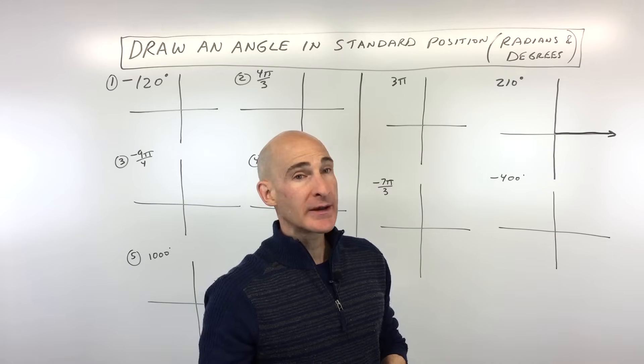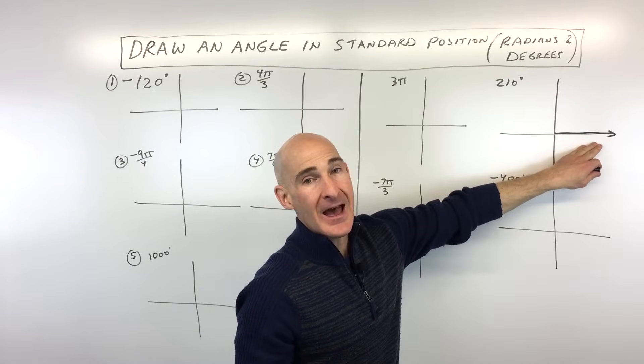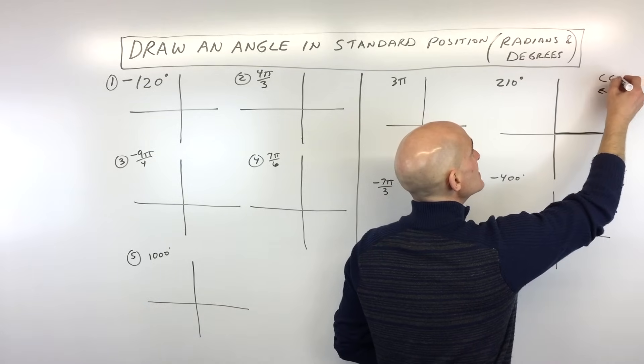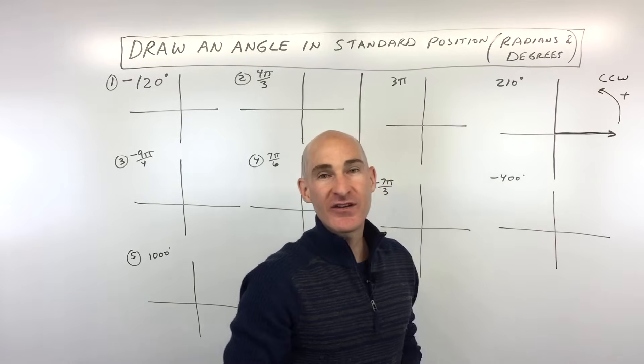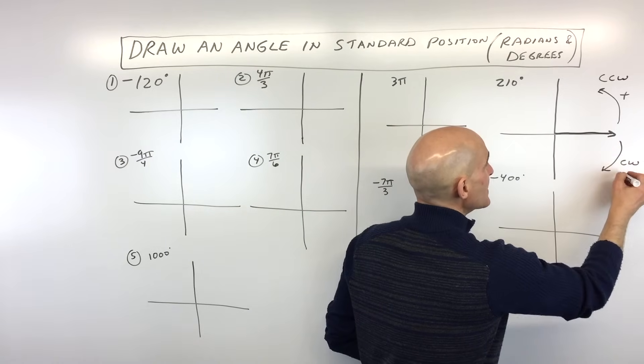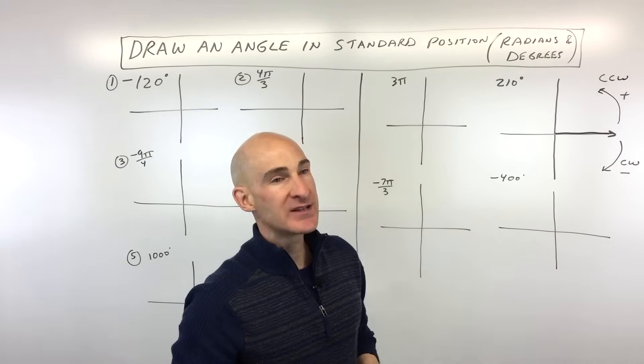Now, the thing to pay attention to when you're drawing an angle in standard position is that if you're going counterclockwise, right, this direction, CCW, that's actually a positive angle. If you're going clockwise this direction, that's actually going to be a negative angle. So you want to pay attention to that.